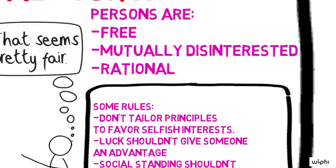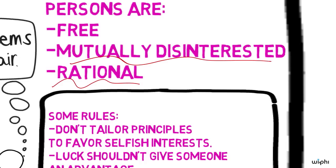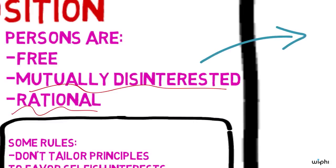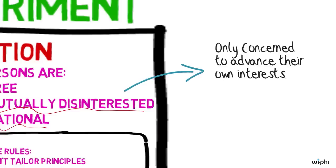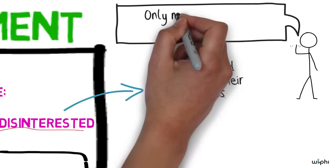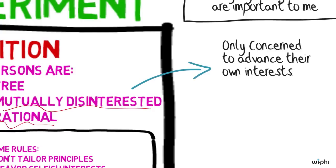Now, I mentioned earlier that the agents in the original position are mutually disinterested and rational. I should probably take a moment to say a little more about what that means. The agents are mutually disinterested in that they are only concerned to advance their own interests. Agents in the original position will not be moved to sacrifice their own interests for the sake of advantaging someone else, nor will they try to disadvantage others due to envy or hatred.